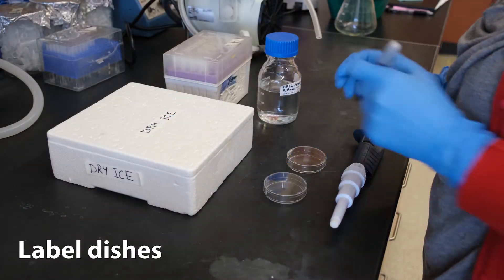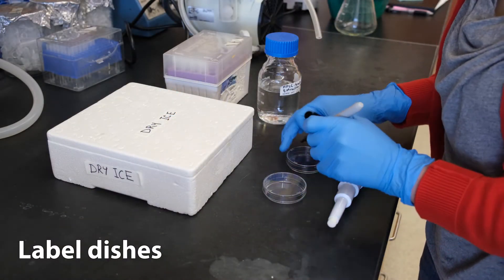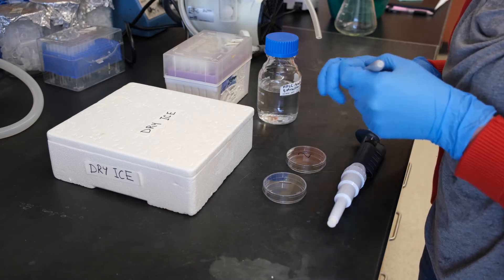Label a small petri dish for each extraction you will do. Place these on dry ice or on a minus 80 aluminum block to chill.